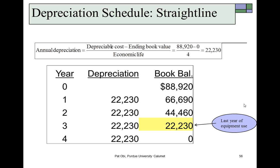The depreciation schedule using the straight-line method gives us the depreciable basis divided by four years, since we're depreciating fully down to zero. This yields an annual depreciation of $22,230 each year. Subtracting these from the book balances, by the end of the third year this equipment still has a book value of $22,230, which is relevant because that is when the equipment will be sold.